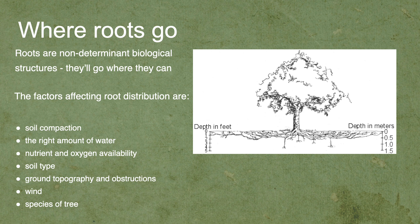Here's a more typical picture of how tree roots normally look. There are a few sinker roots and maybe a tap root that goes down, but on the whole most roots are quite shallow. Roots are non-determinant biological structures, which just means they'll go wherever they can, and where the environment isn't right they'll die off in that area. Things that affect root distribution include soil compaction — if the soil is too compacted with not enough air or water, roots can't get through. They won't go into soil that's too dry, too waterlogged, has poor nutrients, or low oxygen. Soil type — clay versus sandy — also affects the speed and extent of root growth.